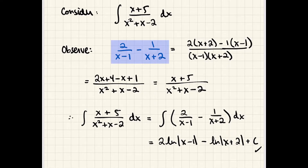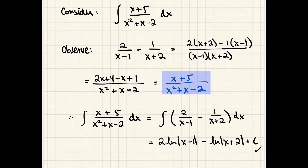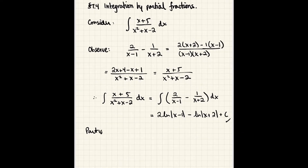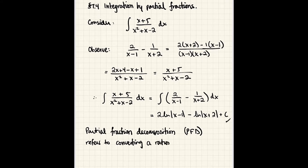So where did this come from? We were just handed that, and we know a basic algebraic process that takes us from these partial fractions to the combined form. Partial fraction decomposition refers to the opposite process of combining and simplifying — it takes a rational expression and decomposes it into a sum of simpler rational expressions. We'll refer to this as PFD from now on.